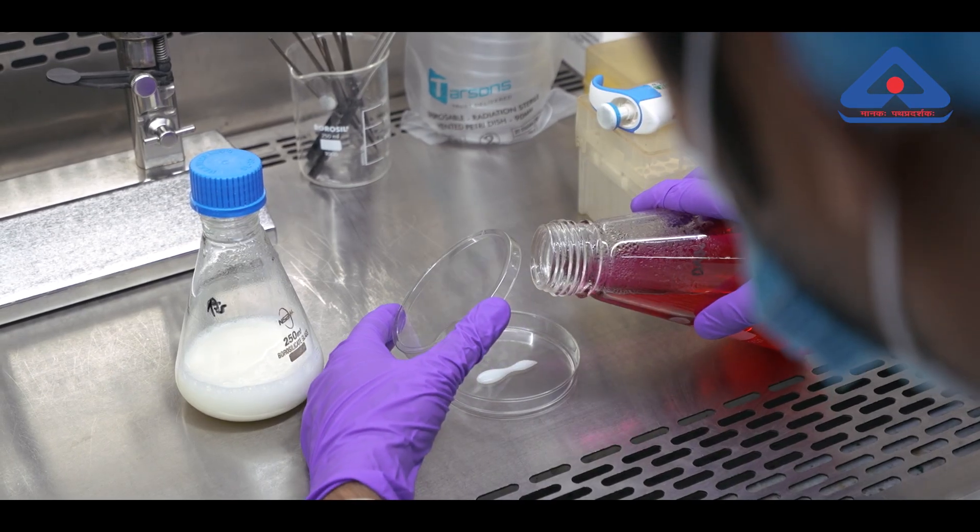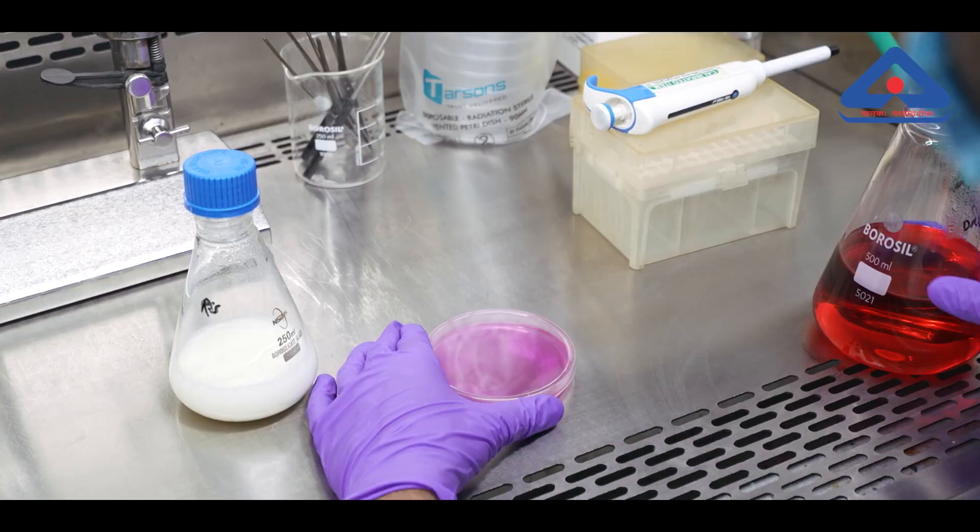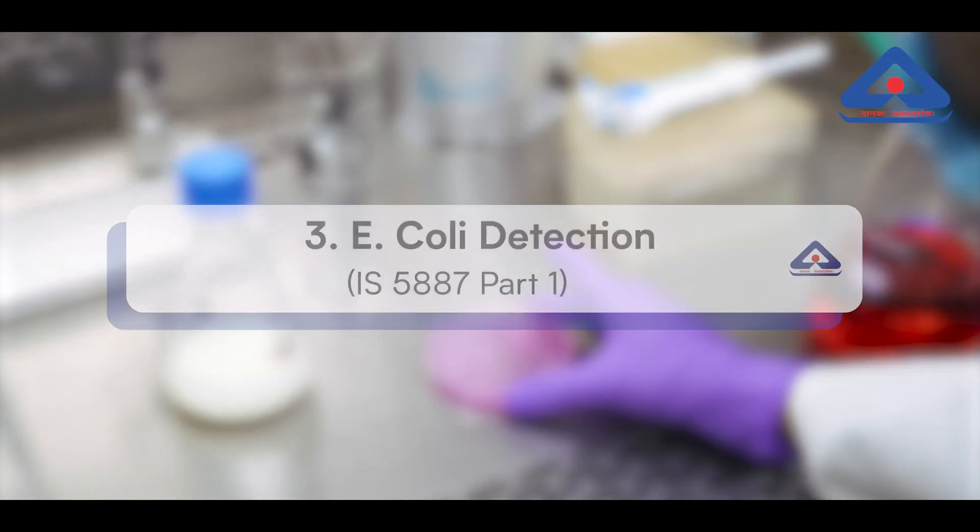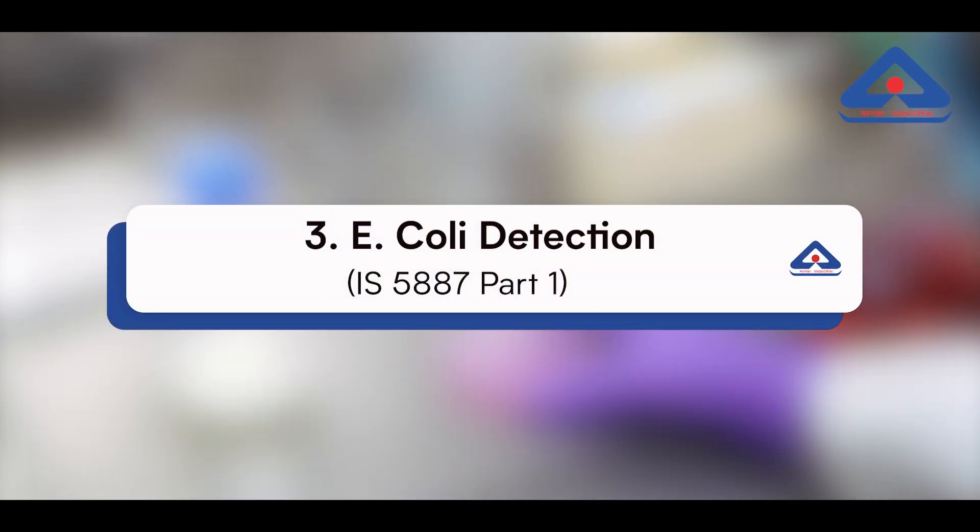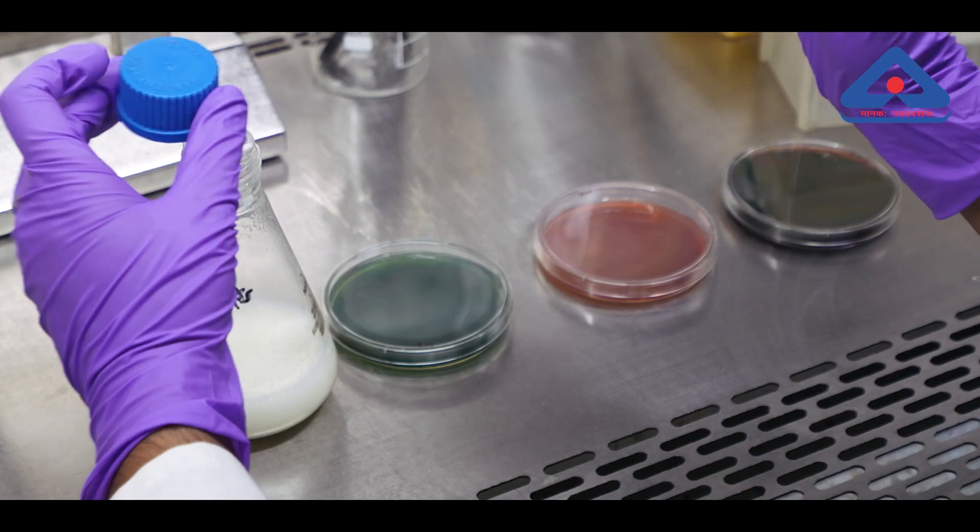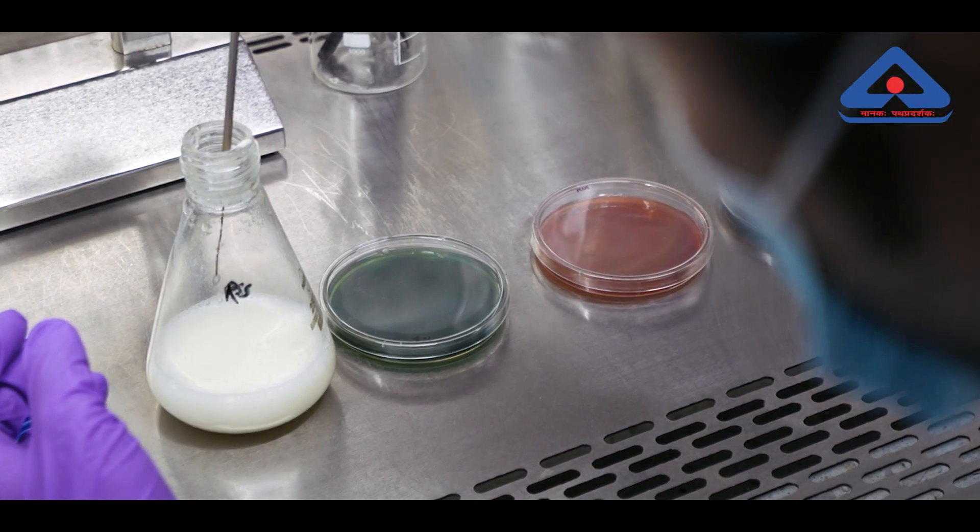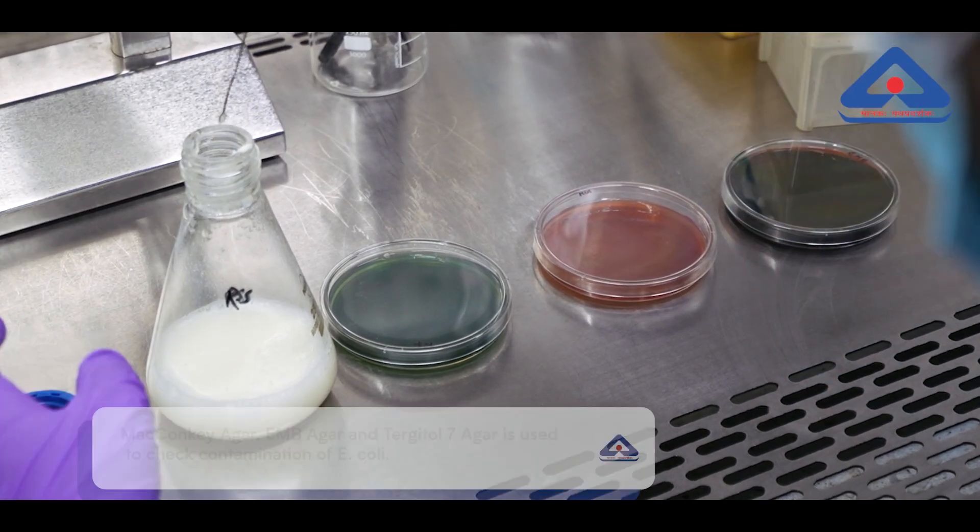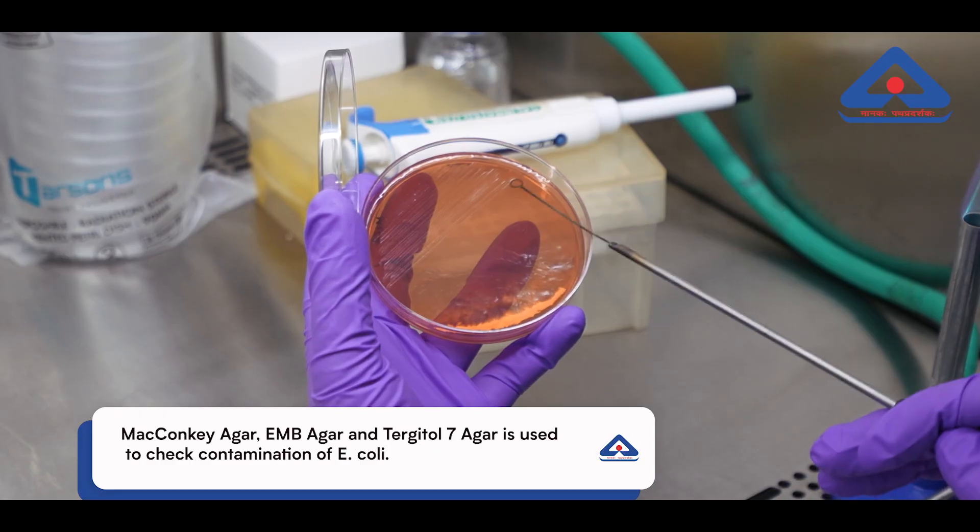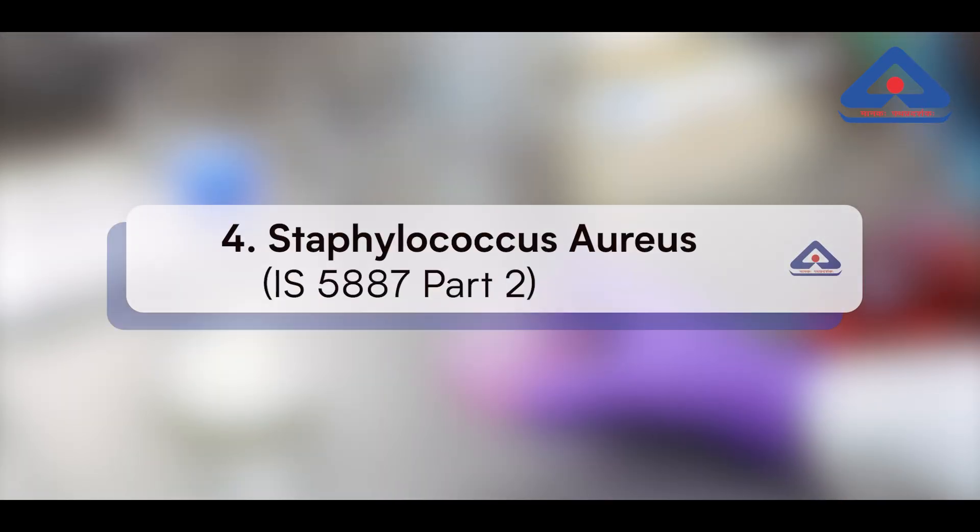Number three: E. coli detection, IS 5887 part 1. In the test of E. coli, a small sample is incubated in a broth. If typical colonies grow, it signals possible contamination.